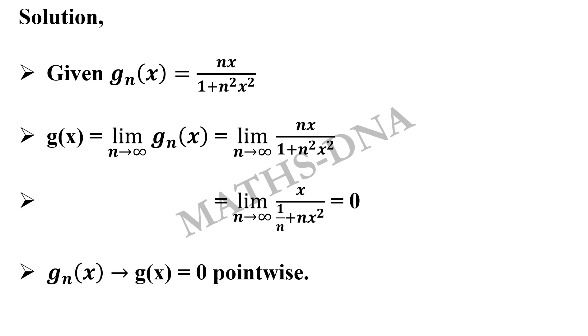So g_n(x) tends to g(x) which is equal to 0, and this is pointwise convergence. So option c and option d are not true from here.